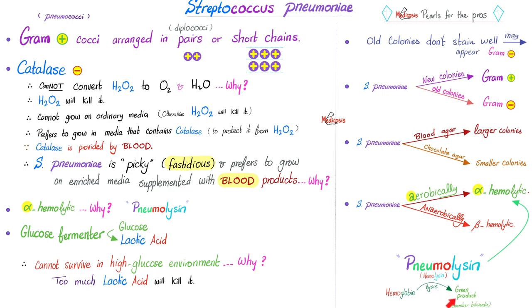What does 'verd' mean? Verd or vert means green. That's why it's alpha-hemolytic — green color.